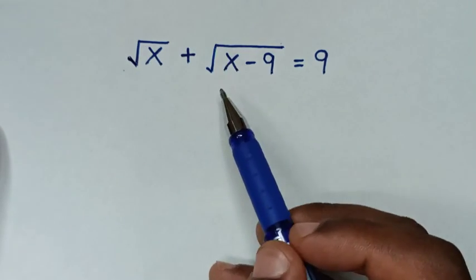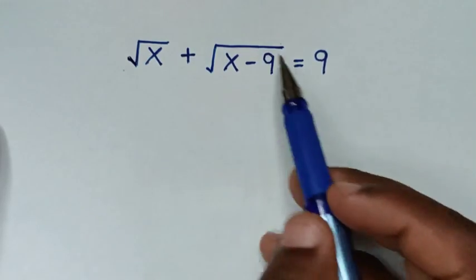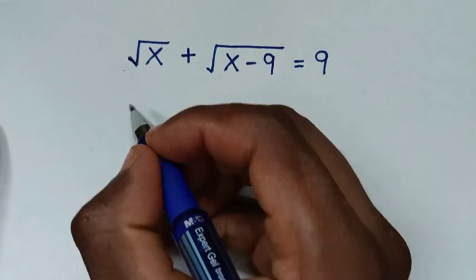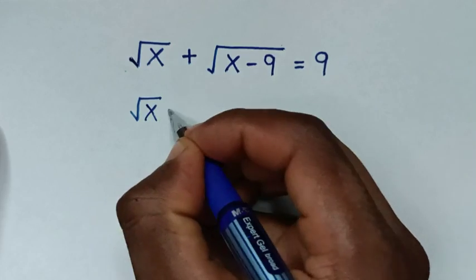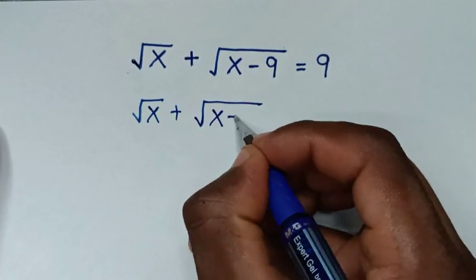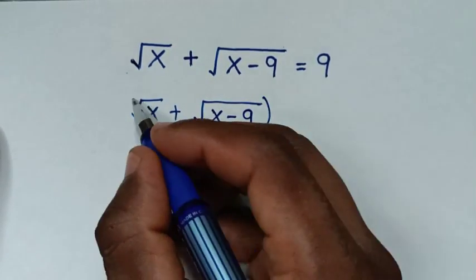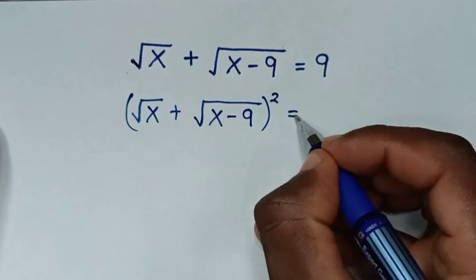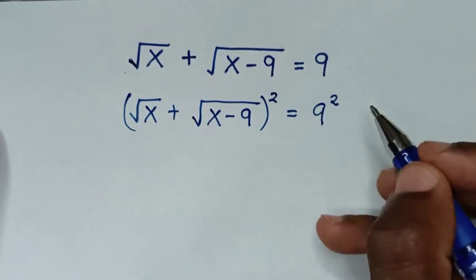In the first step, because we have these square roots, we'll square both sides. So we square the left side — square root of x plus square root of x minus 9 — and we also square the right side.